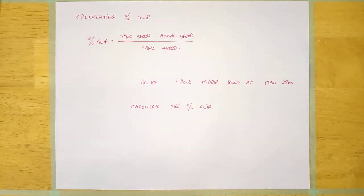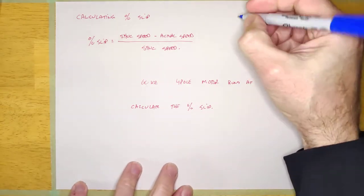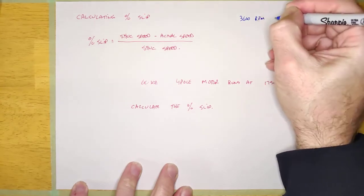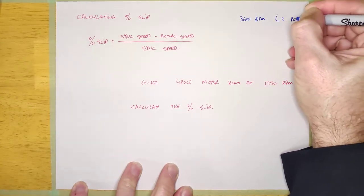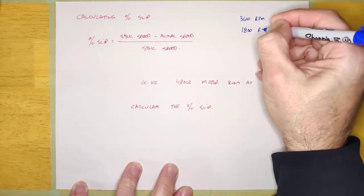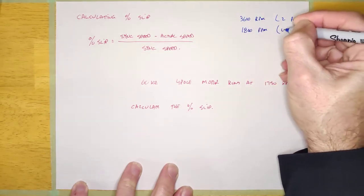But I want you to remember that there's only two sync speeds in real life at 60 hertz. And one is 3,600 RPM, which means it's a two-pole, and one is 1,800 RPM, which is a four-pole.